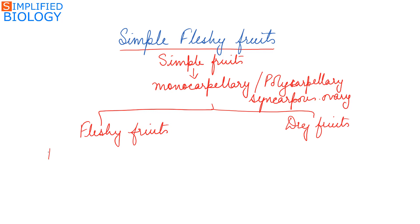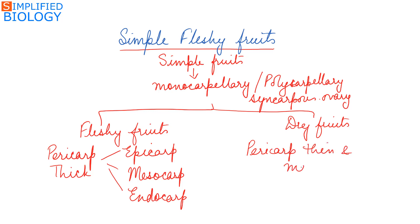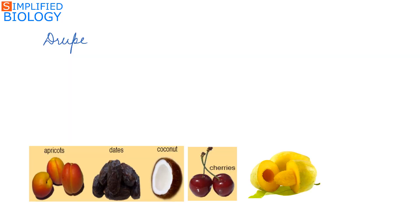Fleshy fruits are ones in which the pericarp is thick and is divided into epicarp, mesocarp, and endocarp. In dry fruits, the pericarp — that is, the wall of the fruit — is thin and membranous. In today's video, we'll study the different types of fleshy fruits.